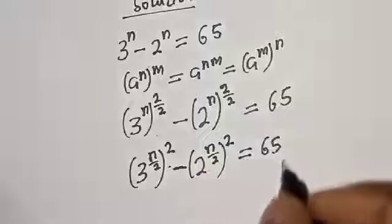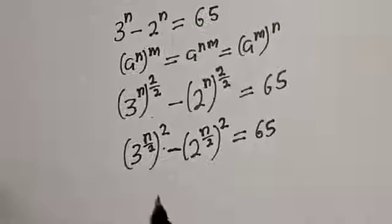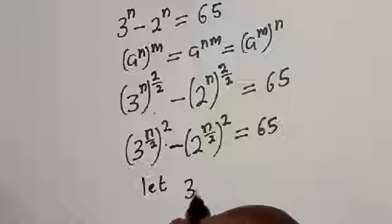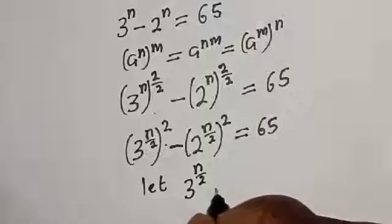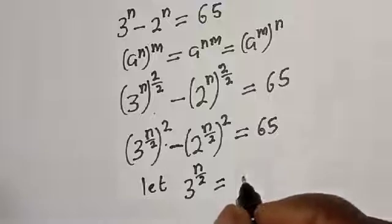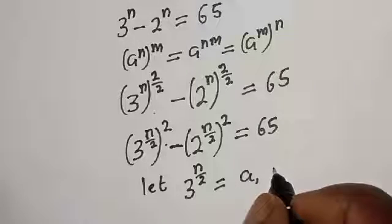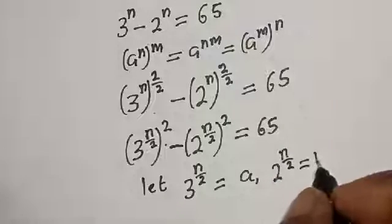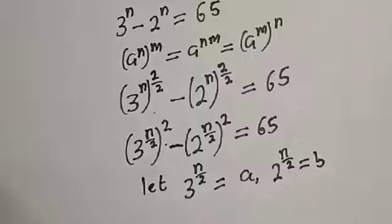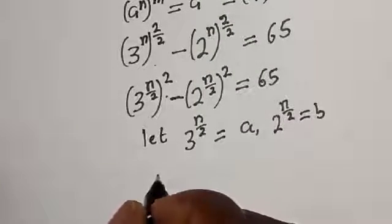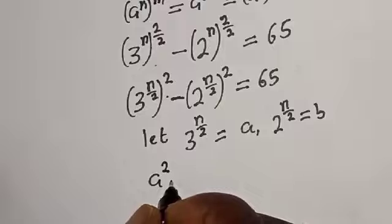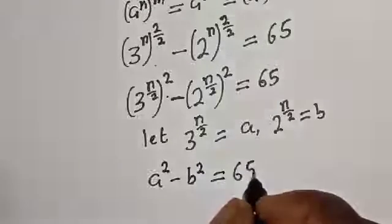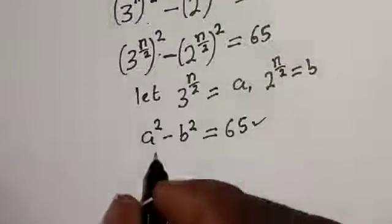Let 3 raised to power n over 2 equal a, and 2 raised to power n over 2 equal b. Then we have a squared minus b squared is equal to 65. This is a difference of two squares.